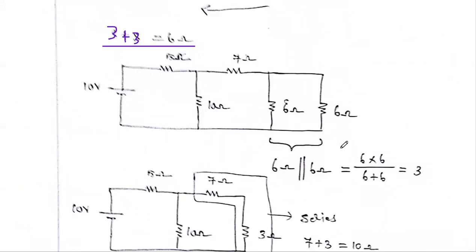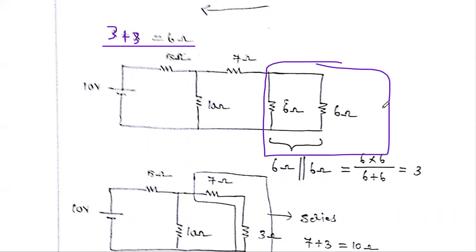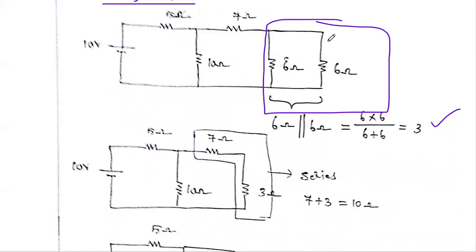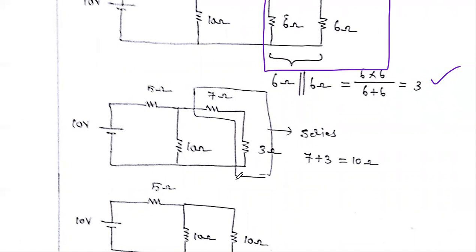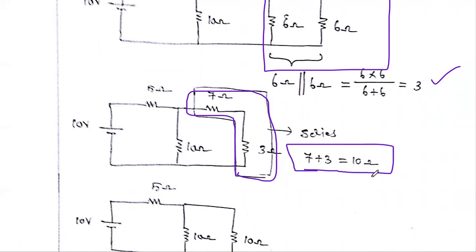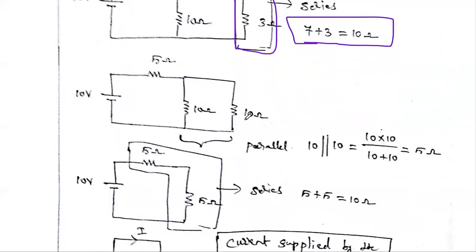Now in the circuit, the last 6-ohm and 6-ohm resistors are connected in parallel. The parallel combination of 6 and 6 is 6×6 divided by 6+6, which gives 3 ohms. We replace those two resistances with a single 3-ohm resistor. Then the 7-ohm and 3-ohm are in series — 7 plus 3 equals 10 ohms — and we replace them with a single 10-ohm resistance.